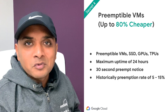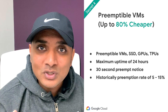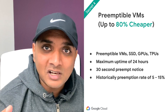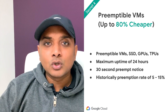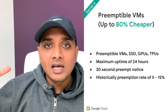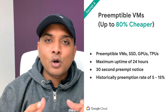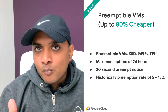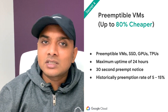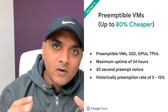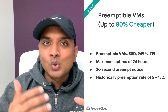Secret number four is preemptible VMs — this one is my favorite. This one secret can help you save up to 80% of your cloud bill. Preemptible VMs are excess capacity that Google Cloud leases out to you for much cheaper than a regular VM. There are caveats: these resources can be provisioned for a maximum of 24 hours, and Google Cloud can pull the plug on these resources with just a 30-second warning. So if you have workloads that you can manage within those constraints, this is an excellent tool to leverage.